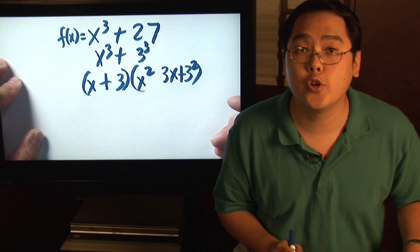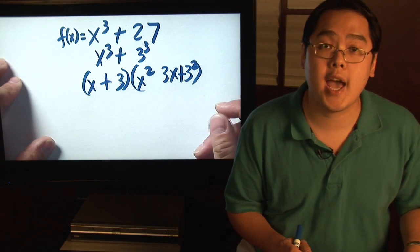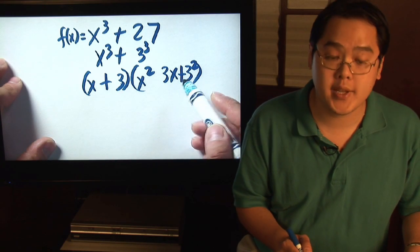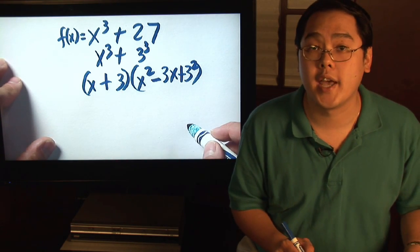Now something else about factoring cubes, it's always going to have two positives and one negative sign. Now, since we already have the two positives, you will have the negative sign right here.